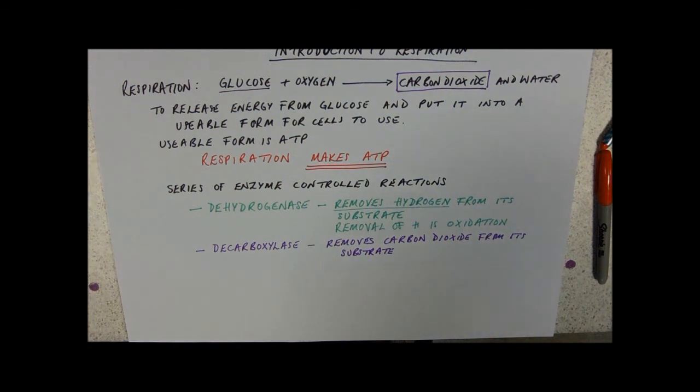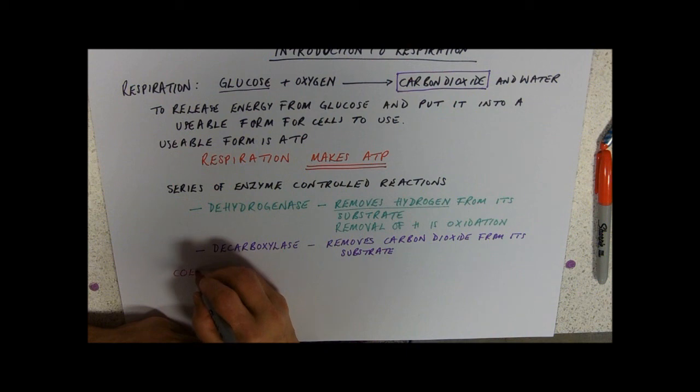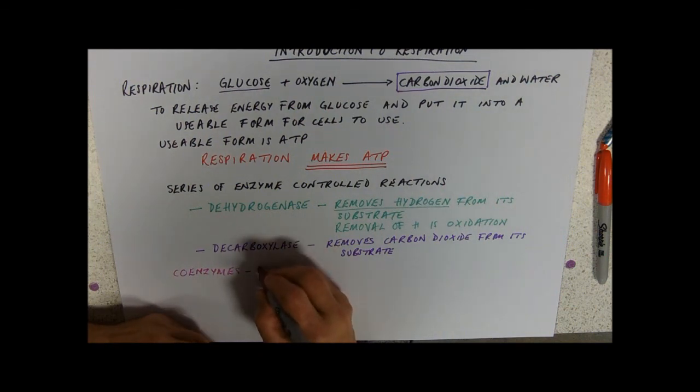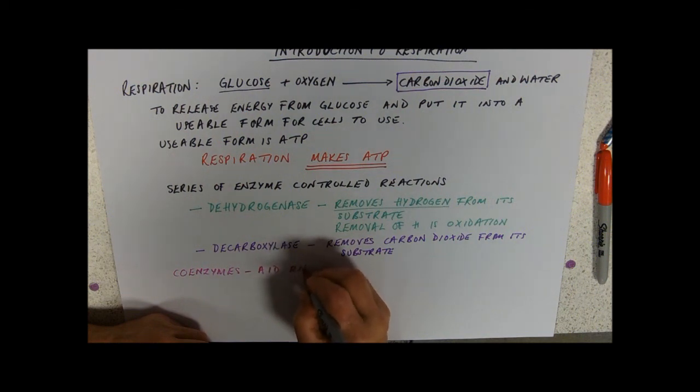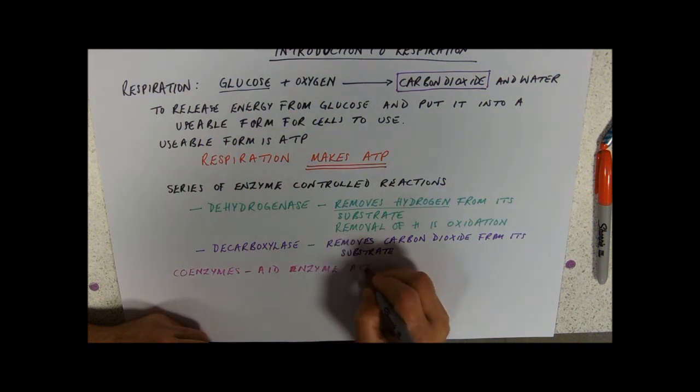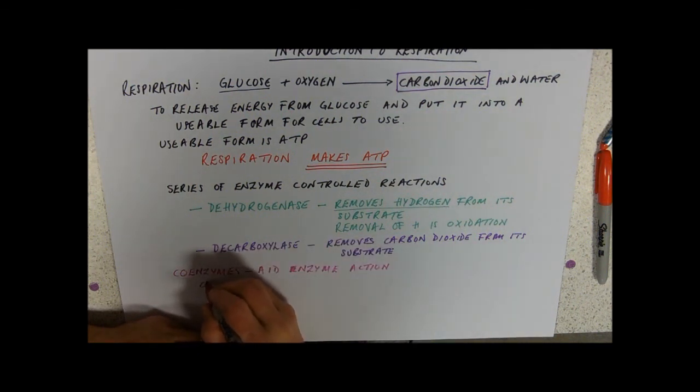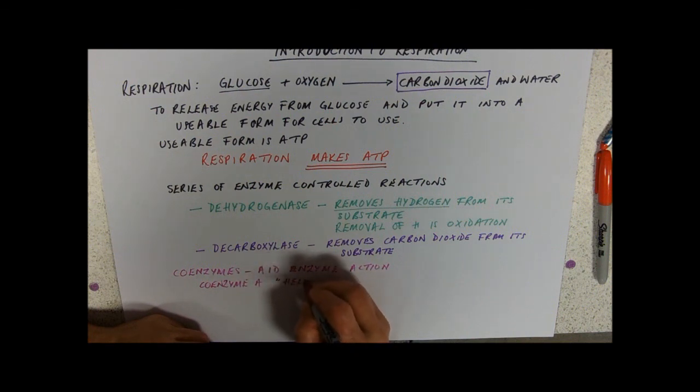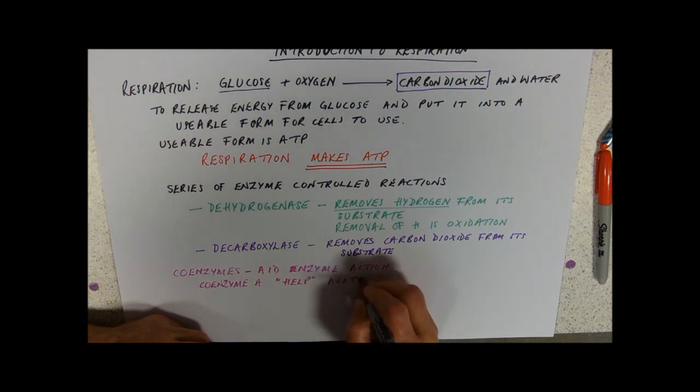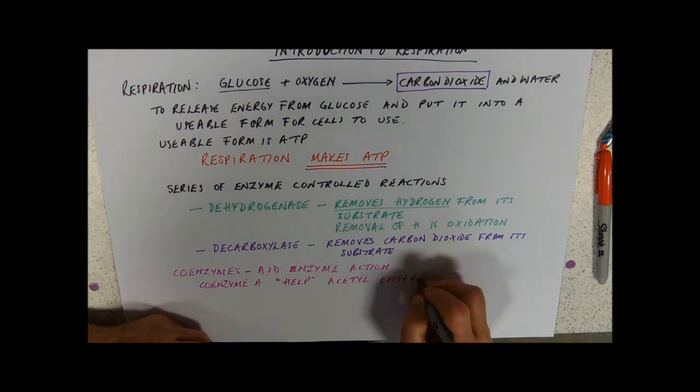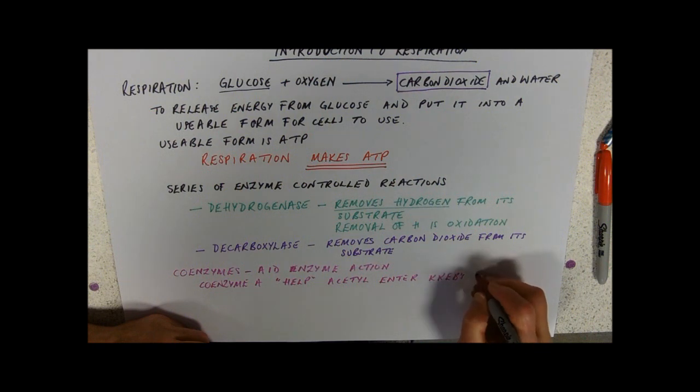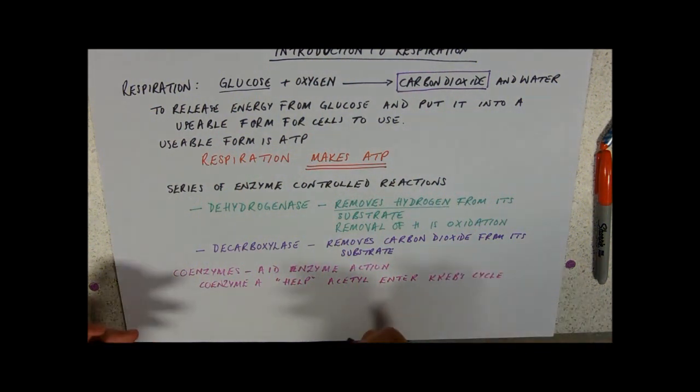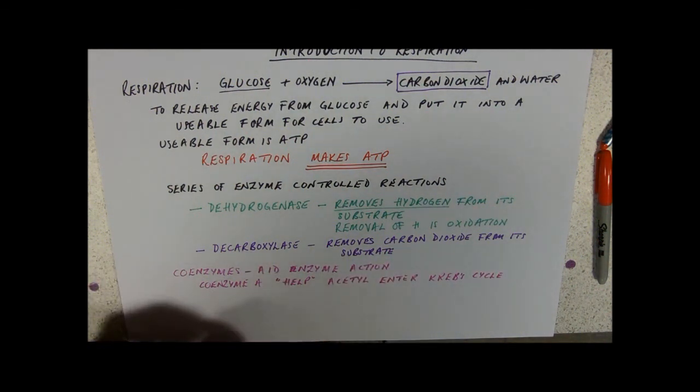Just to add interest to the whole topic, there are some coenzymes involved. What does a coenzyme do? These aid enzyme action in some way. We've got coenzyme A, nice easy one to remember, and its job is to help the acetyl enter Krebs cycle. I know that if you're watching this as an introduction you don't know what Krebs cycle is. There will be another video on what these things do. You might as well get an overview of what it's all about.